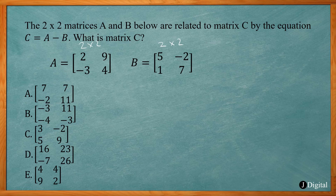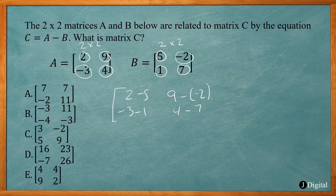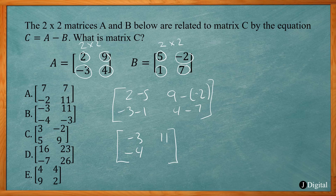We add or subtract the corresponding locations. So subtracting: 2 minus 5, and 9 minus negative 2. Then negative 2 minus 2, negative 3 minus 1, and 4 minus 7. 2 minus 5 is negative 3, 9 minus negative 2 is 11, negative 3 minus 1 is negative 4, and 4 minus 7 is negative 3. So the answer is B.